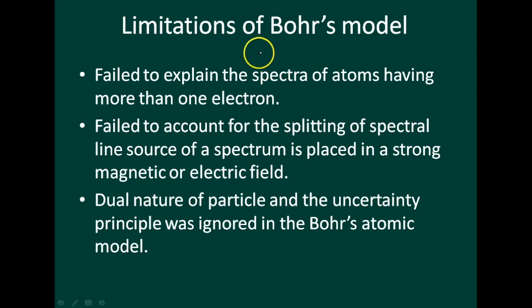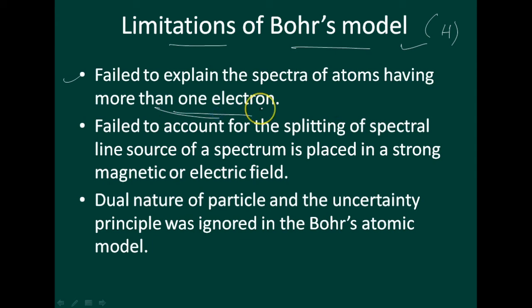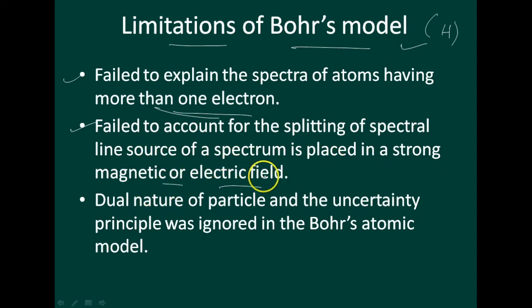Now, the limitations of Bohr's model. First limitation: it fails to explain the spectra of atoms having more than one electron. It can explain the hydrogen spectrum but cannot explain the spectra of atoms with more than one electron. Second limitation: it fails to account for the splitting of spectral lines when the source of spectrum is placed in a strong magnetic or electric field.